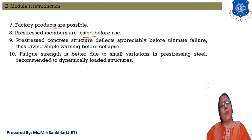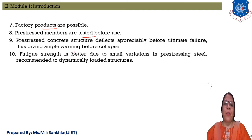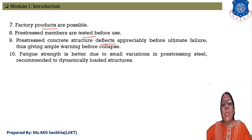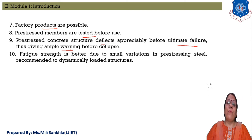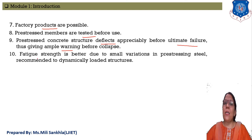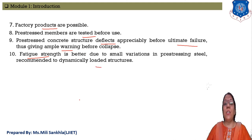Prestressed concrete structures deflect less compared to RCC members. Furthermore, prestressed concrete structures deflect appreciably before ultimate failure, giving more time before collapse — meaning we have maximum time for surviving. Lastly, the fatigue strength of prestressed concrete members is better than RCC. Fatigue means the load-carrying capacity under repeated loading — this is higher in prestressed members than in RCC members.